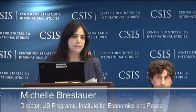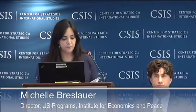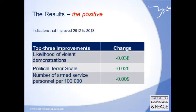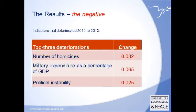Among the top rising nations and fallers, risers are typically countries emerging from conflict, such as Libya, Sudan, and Chad, while the biggest fallers tend to be those experiencing open armed conflict. Improved indicators include a lower likelihood of violent demonstrations and a slight calming in Europe and Arab Spring countries. Negative indicators include homicides — Honduras has the highest homicide rate in the world, which increased by 10 this past year. Military spending fell for the first time since 2008 in total terms, but more countries increased expenditure as a percentage of GDP.